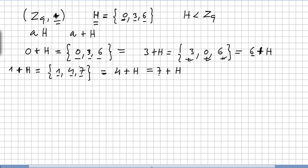And 2 plus H: 2+0=2, 2+3=5, 2+6=8, so 2+H = {2, 5, 8}. This equals 5+H and 8+H as well.